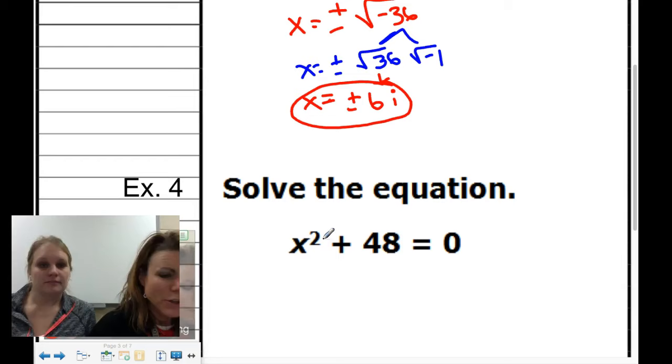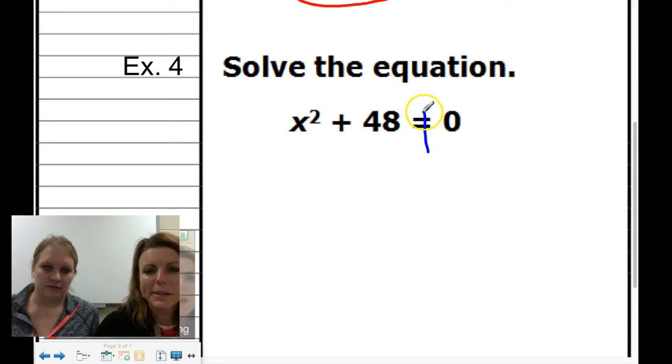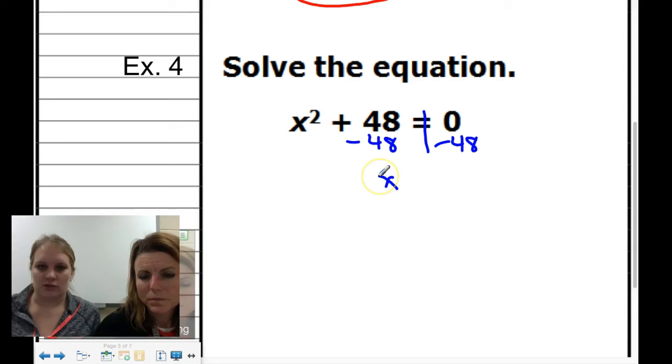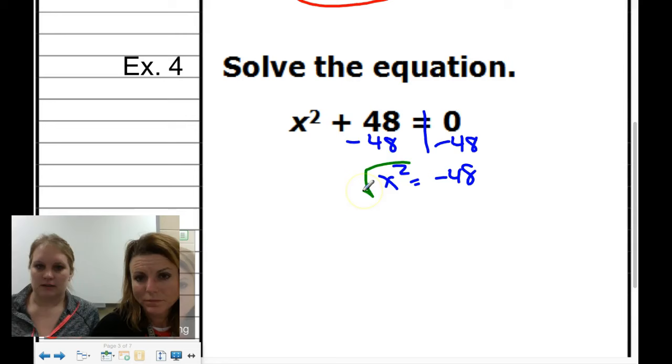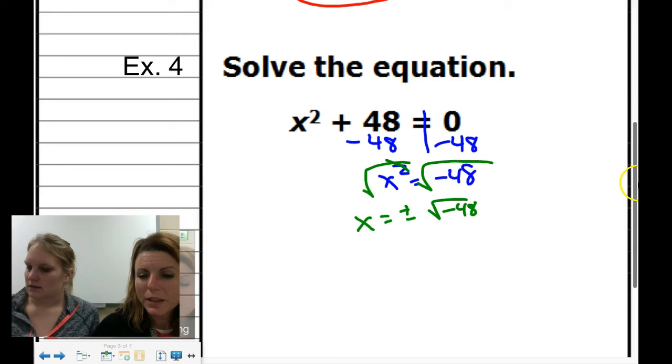Do you want to do this one? We just want to get the x squared by itself. First we have to move the 48. So we're left with x squared equals negative 48. Now we're going to square root both sides. Those cancel. We're left with x, and since we square root of the x, we have a plus or minus. Square root negative 48. And now we can break that apart.